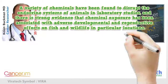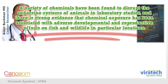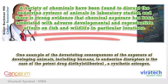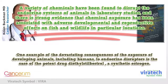A variety of chemicals have been found to disrupt the endocrine systems of animals in laboratory studies, and there is strong evidence that chemical exposure has been associated with adverse developmental and reproductive effects on fish and wildlife in particular locations. One example of the devastating consequences of exposure of developing animals, including humans, to endocrine disruptors is the case of the potent drug diethylstilbestrol, a synthetic estrogen.